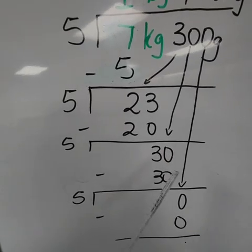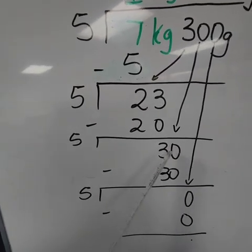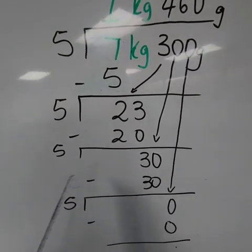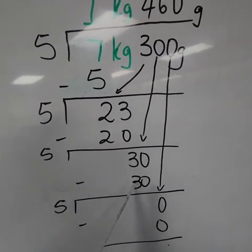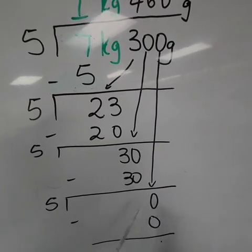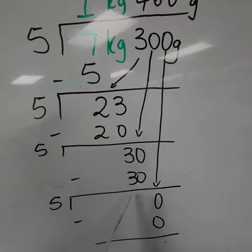Then we say, how many times does 5 go into 30? Or 30 divided by 5. That will give us 6. 6 multiplied by the 5. That will give us 30. Then we subtract. 30 minus 30. That will give us a 0. Or will leave us with nothing.